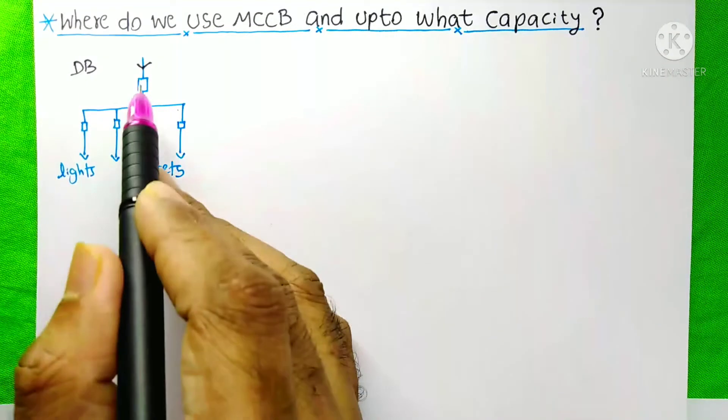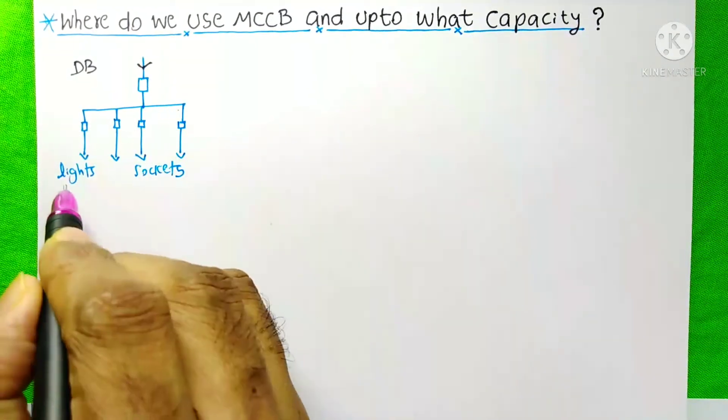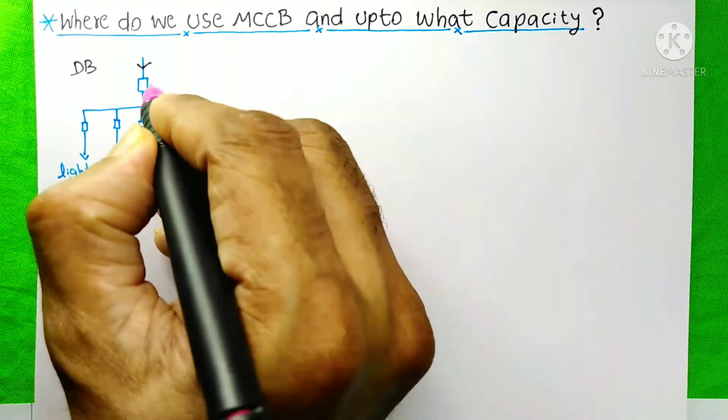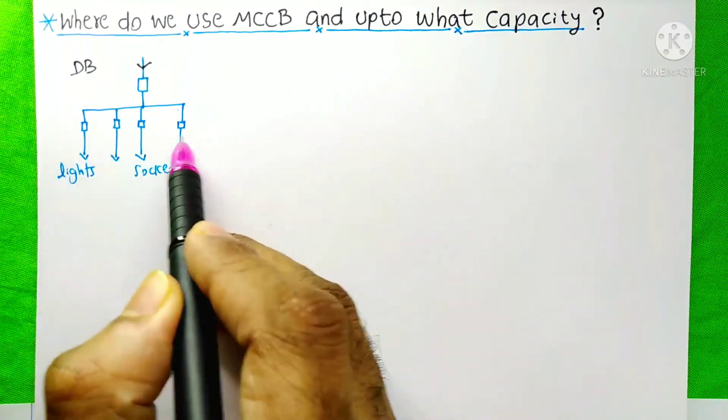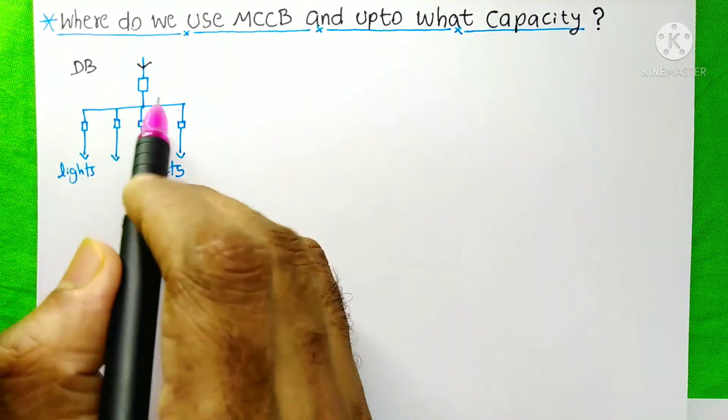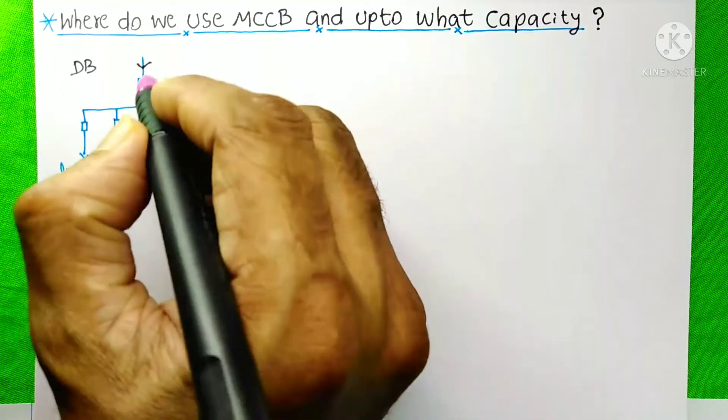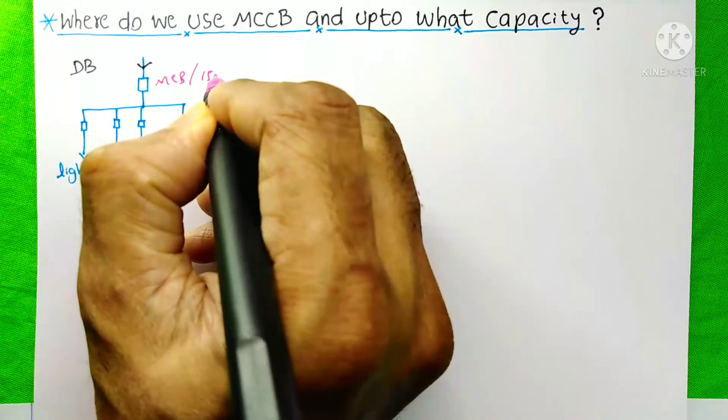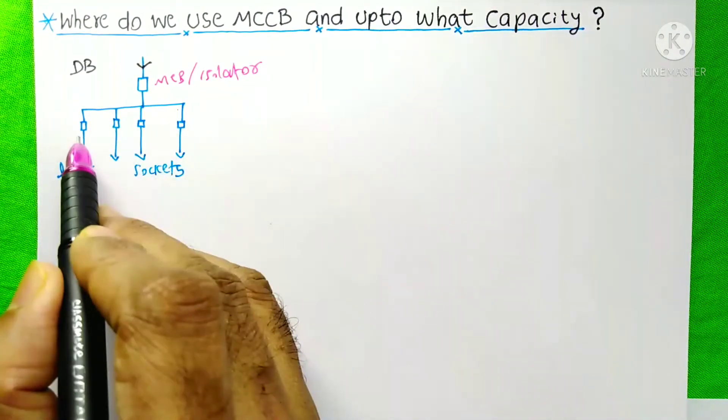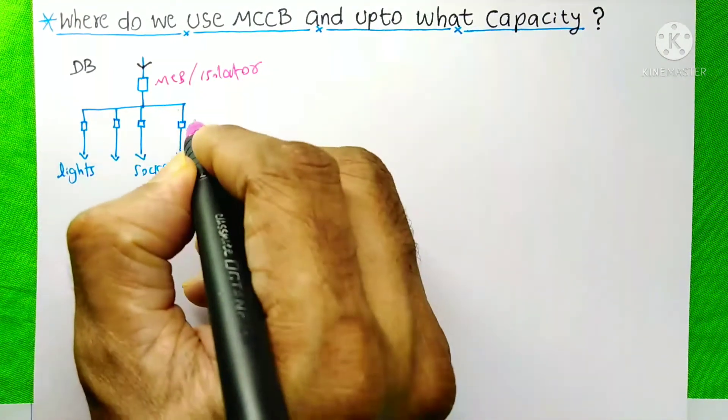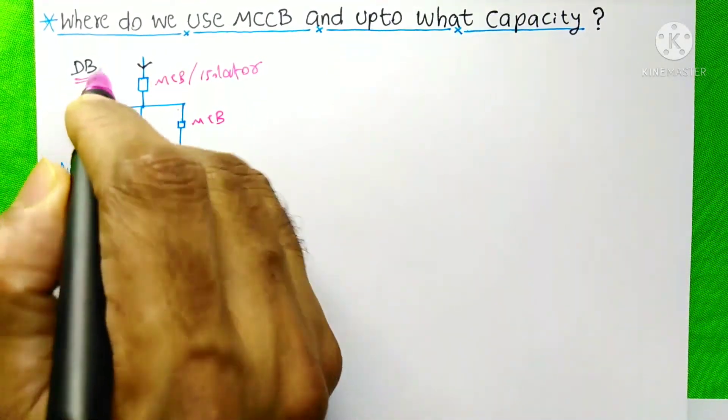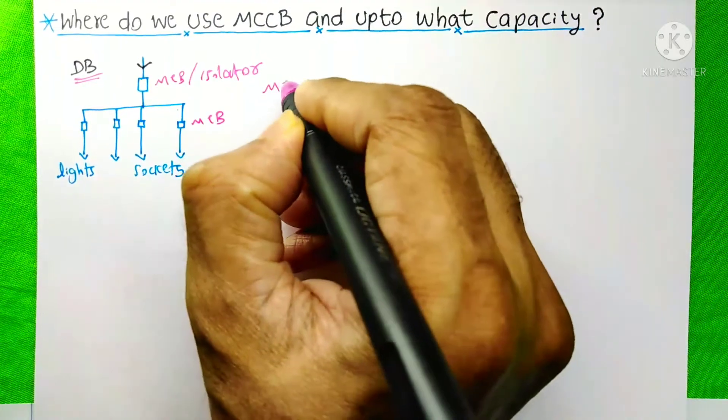It is a DB and this DB is feeding these lights and sockets. It is the Incomer breaker and these are the branch breakers. In this case, for this Incomer, we generally use MCB or isolator. And for the branch circuits, we generally use MCBs. That means, generally in case of DBs, we don't use MCCB.